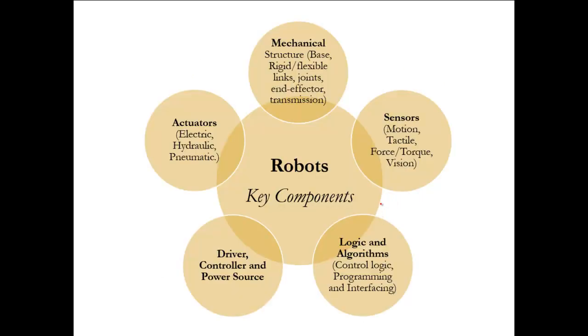Now, we can classify them, or we can see the key components this way. The mechanical part includes the structure, the base, rigid links or flexible links, joints, end effector, and one of the most important things is transmission. Sometimes you need to transmit the motion or forces with gears, or maybe other elements like belts and other things. You have sensors, which is sometimes motion sensing, tactile sensing, force and torque sensing, and vision sensing. The actuators are generally mostly electrical, but it can be hydraulic and pneumatic also. You have the driver part of the robots, the controller and the power source, and in the last one you have logic and algorithms, that is control logic, the programming and the interfacing part. So all these things are very important components of a typical robot or robotic manipulator.